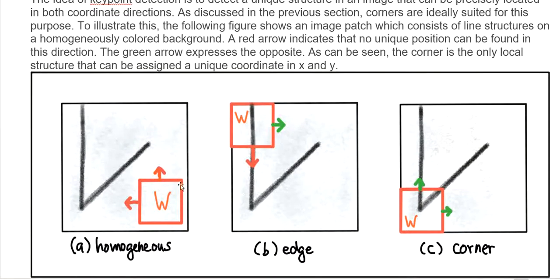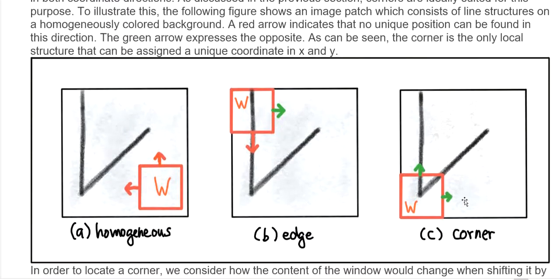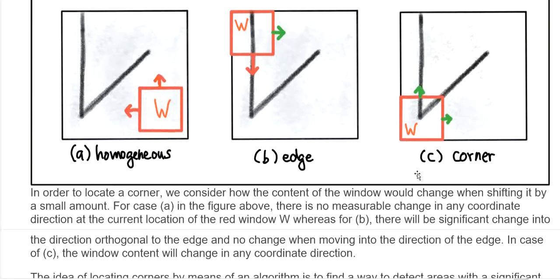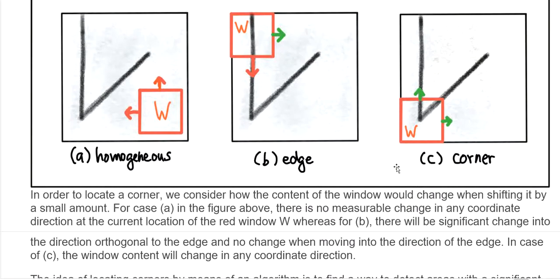Looking at the three pictures here, the red arrow indicates that no unique position can be found in that direction (X or Y). The green arrow expresses the opposite — the change of gradient in the picture. We can see that corners are the only local structures that can be assigned unique coordinates in X and Y. In order to locate corners, we look at the content of window W and how it changes when we shift it by a small amount.